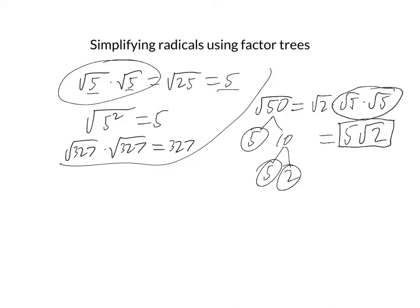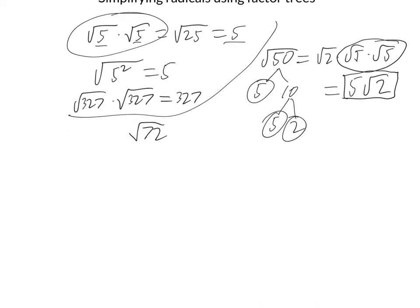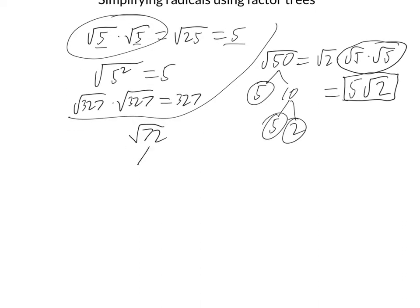I'm going to give you another example that's a little bit more interesting. Let's say we're doing something like the square root of 72. So now if we do the square root of 72, we can, again, break that down any way we want. Let's say I do 8 and 9, and 8 is 4 times 2.